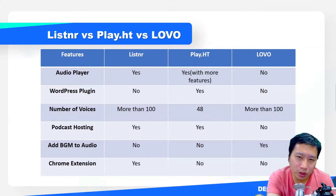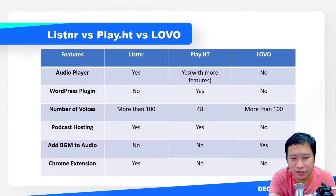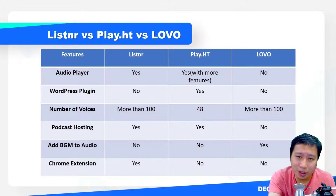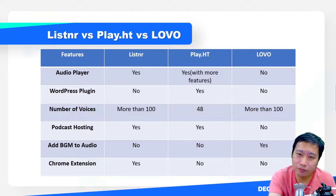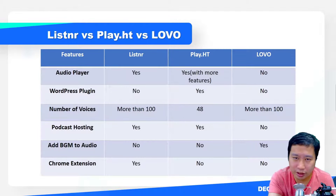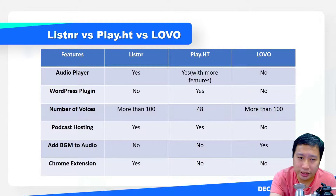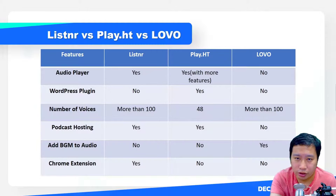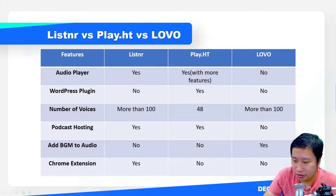Between the three tools, if you're looking for multiple use cases and features, Listner is a great option. For really high-quality human-like voices, Lovo is the one to go with. PlayHT might be best if you want to use its audio player to capture leads or engage visitors. Overall, go for Lovo for great voices and Listner for multiple use cases and productivity purposes.